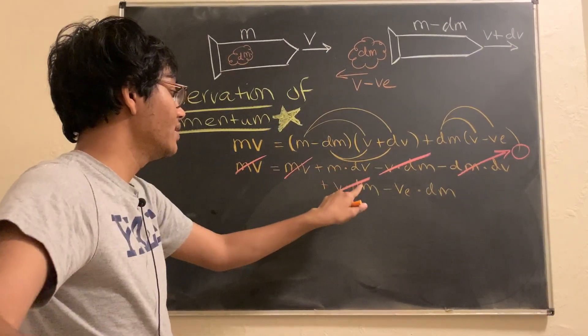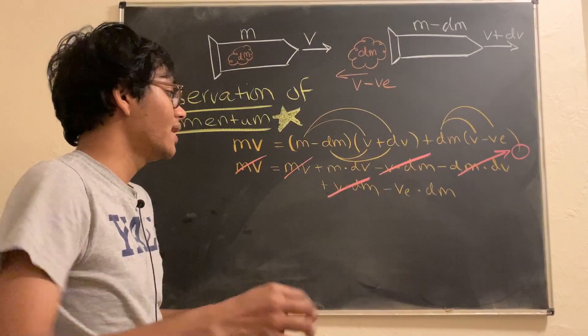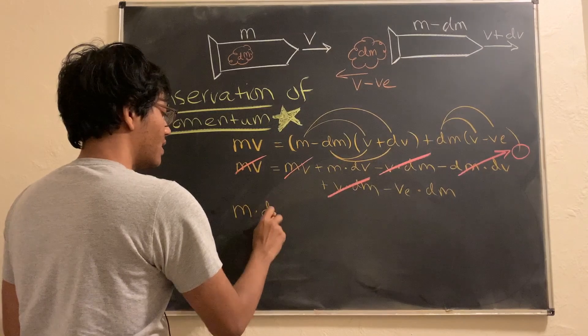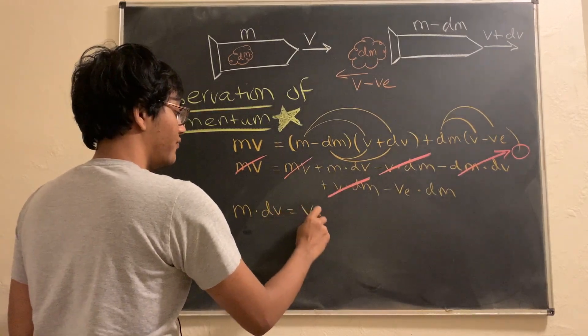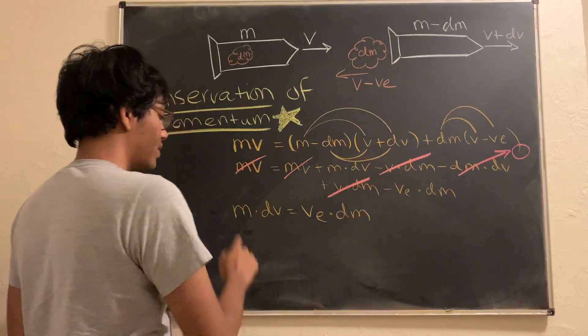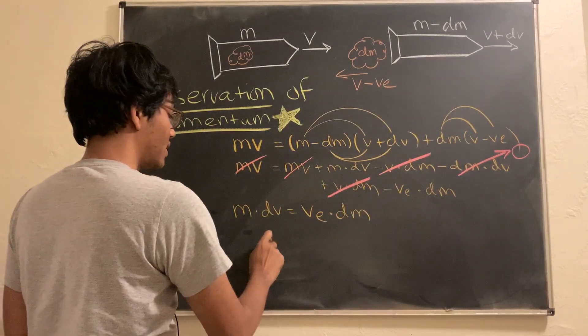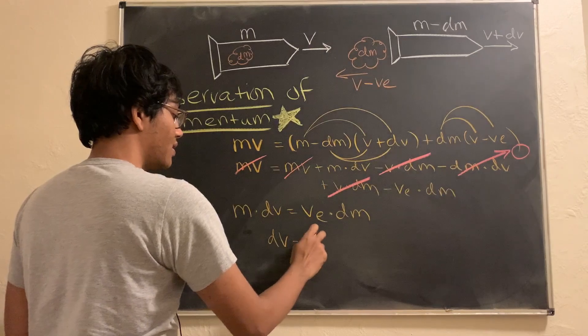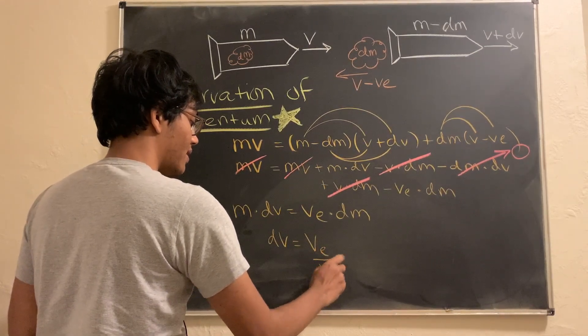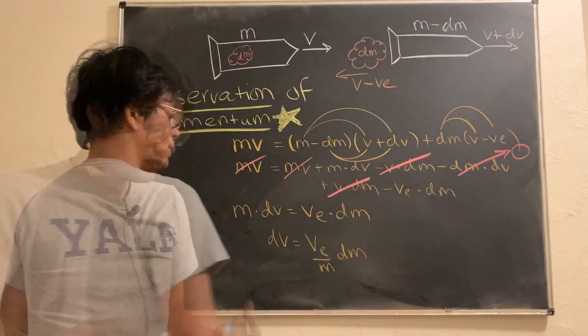And so, we're left with something quite simple here. M dV equals V exhaust dm. So, the mass of the rocket times delta V equals V exhaust times dm. I'm going to go ahead and move M to the other side. So, I have delta V is V exhaust over my mass times dm.